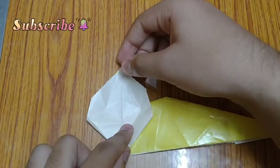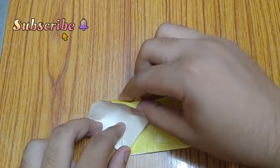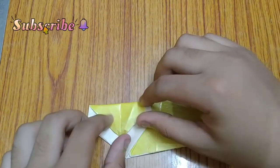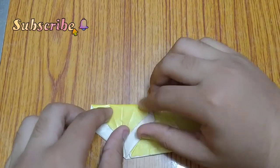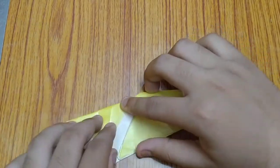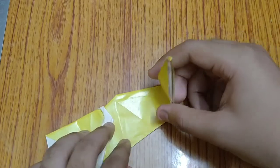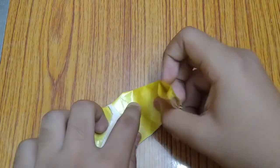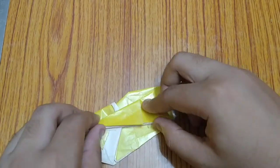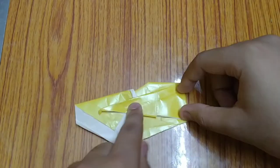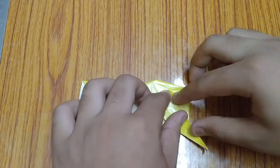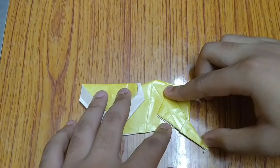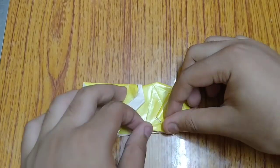Then fold this one inwards to the other side. Now fold this corner downwards like this. Now fold this part, and then this one, and again like this.